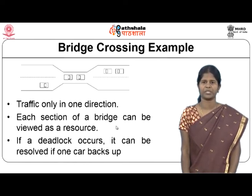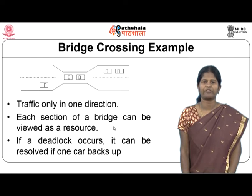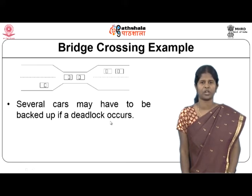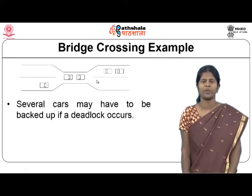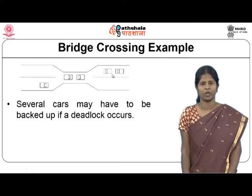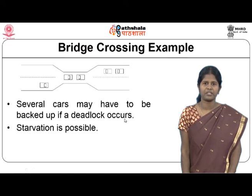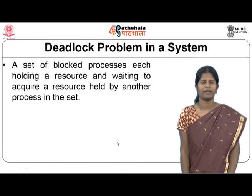To resolve this deadlock, one of the cars must back up. If several vehicles are clogged on both sides, multiple vehicles may have to back up. It is also possible to have starvation because vehicles will wait a long time to use the bridge. This kind of situation can happen in a computer system as well, where a set of blocked processes each holds a resource and waits to acquire a resource held by another process in the set.